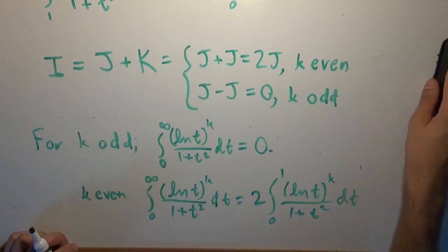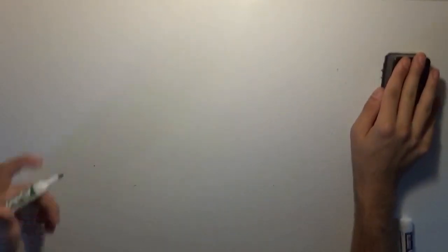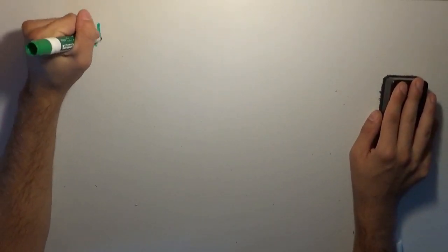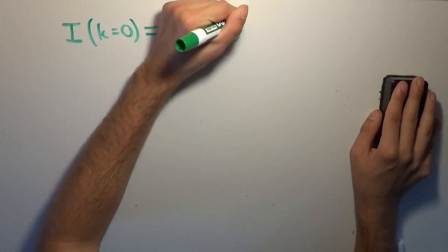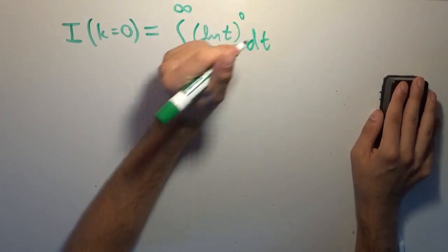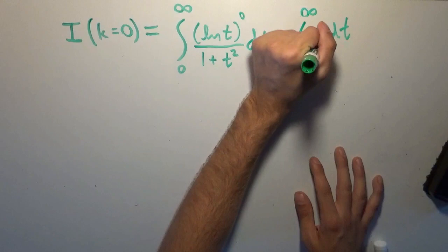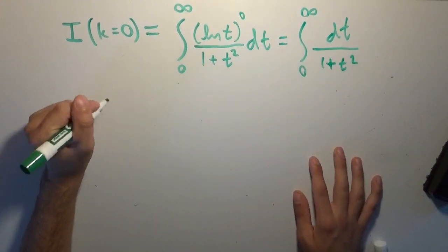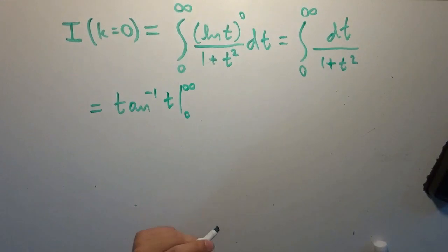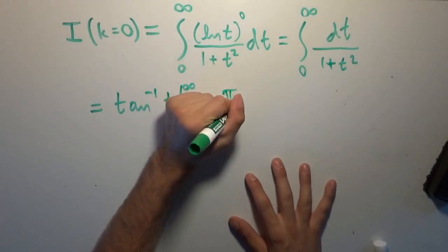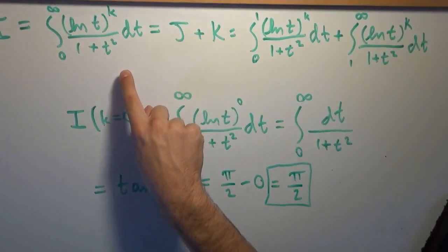Let's do the first two cases. For k = 0: I(0) is the integral from 0 to infinity of ln(t)^0 over (1 + t²) dt. Since ln(t)^0 = 1, this becomes the integral of dt/(1 + t²), which equals arctan(t) evaluated from 0 to ∞, giving π/2 − 0 = π/2.